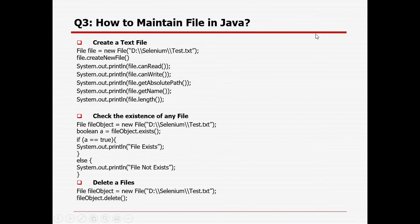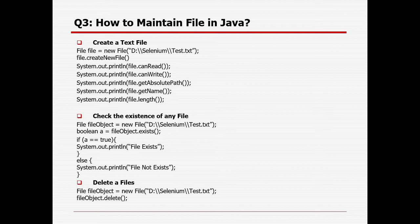Similarly, for files, we can create a file using the File class by creating an object or instance and providing the exact file path — it can be a text file, CSV, Excel, or Word document. Using the createNewFile method, we can create the file. We can then check whether the file is readable or writable, get the absolute path, name, and length in bytes. We can also check file existence using the exists method and delete a file using the delete method.